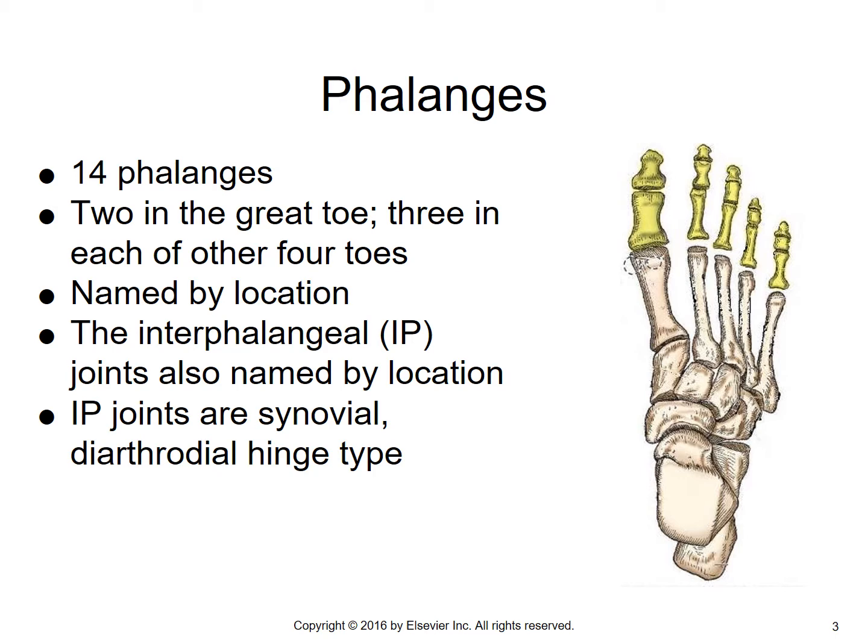As far as the phalanges are concerned, there is a total of 14 phalanges. There are two phalanges in the great toe and three phalanges in each of the other four toes. So in the big toe, we've got the distal phalanx and the proximal phalanx. In each of the other toes, we have three phalanges: a proximal, a middle, and a distal phalanx.